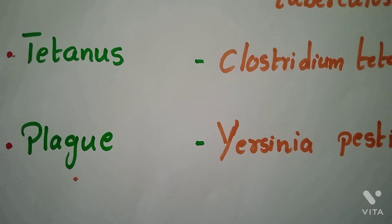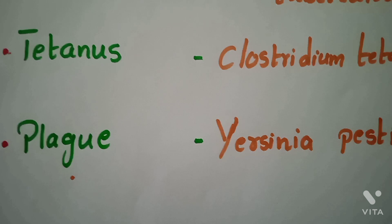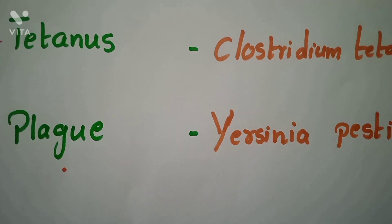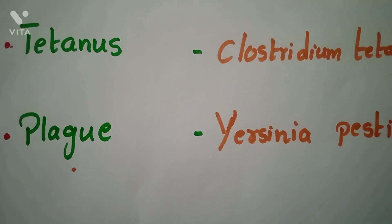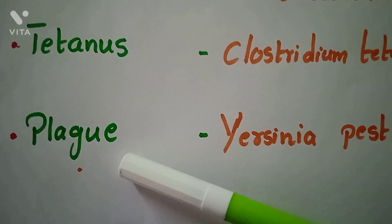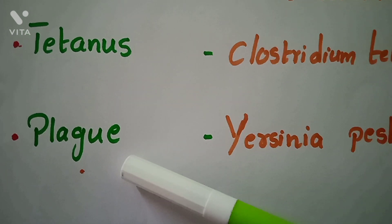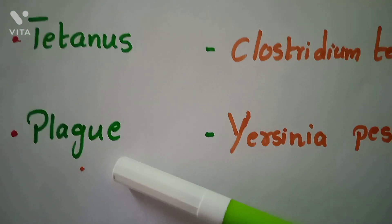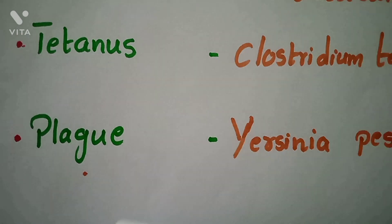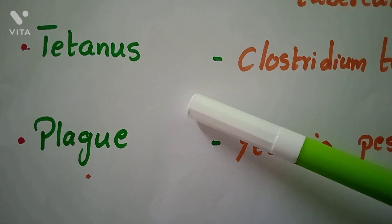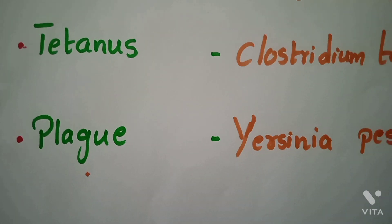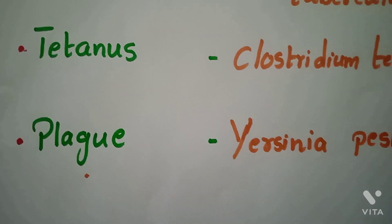Plague. Plague disease is caused by Yersinia pestis. The symptoms of plague are diarrhea, vomiting, fever, and blackening and death of tissues in fingers, nose, and toes.